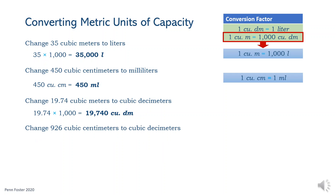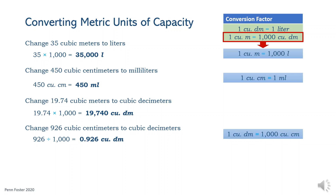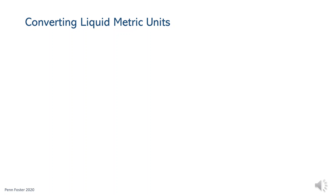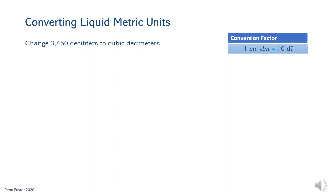The last problem in this set asks to convert cubic centimeters to cubic decimeters. Since there are 1,000 cubic centimeters in a single cubic decimeter, divide the volume, 926, by the conversion factor 1,000. The answer is 0.926 cubic decimeters. Next, change 3,450 deciliters to cubic decimeters. Since 1 cubic decimeter is equivalent to 10 deciliters, divide the given volume by 10. The answer is 345 cubic decimeters.